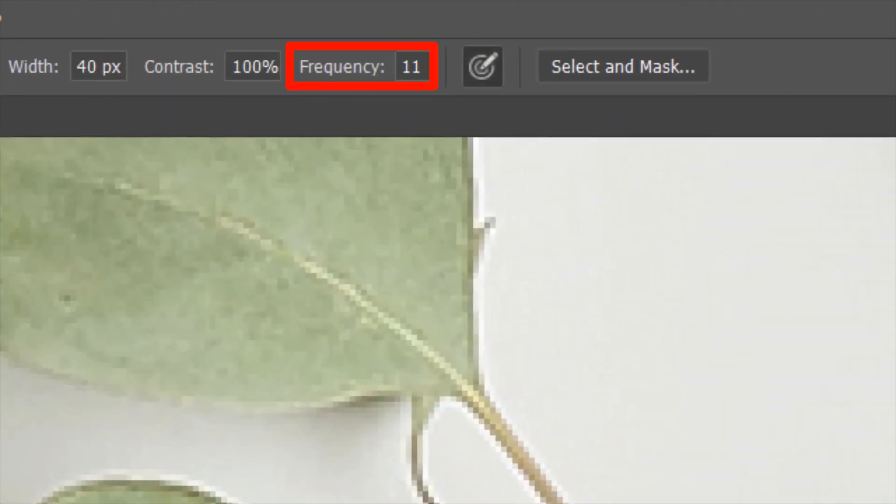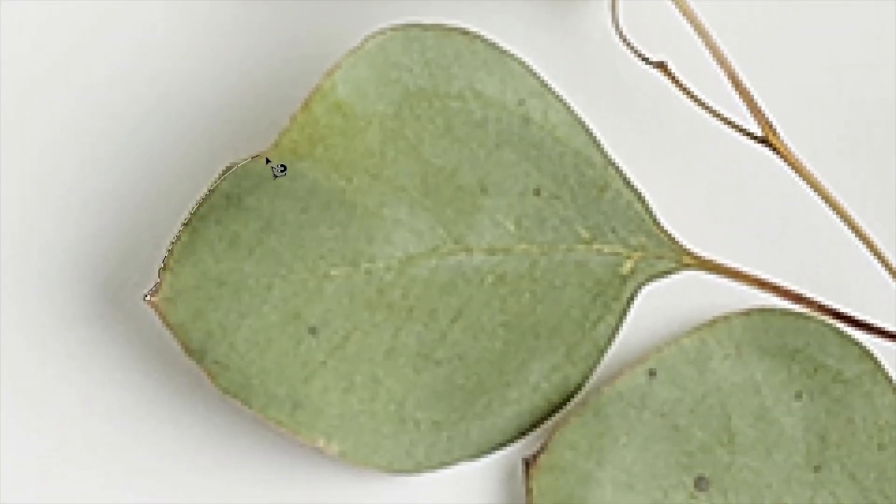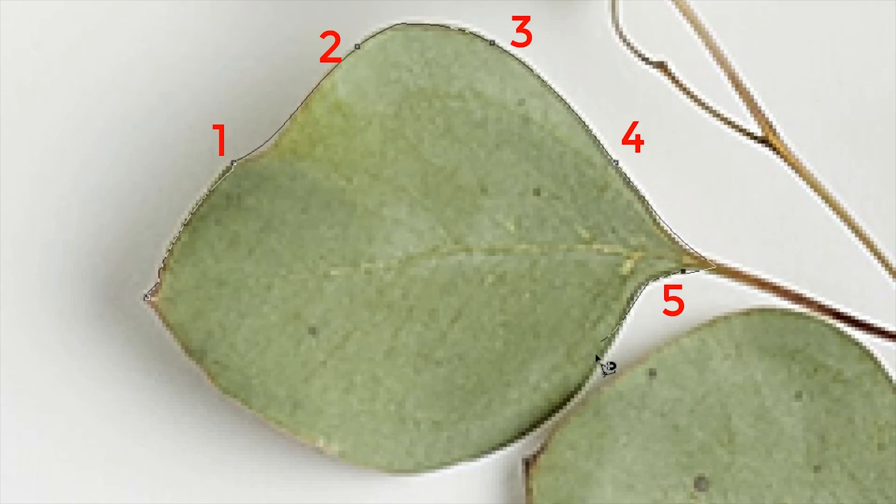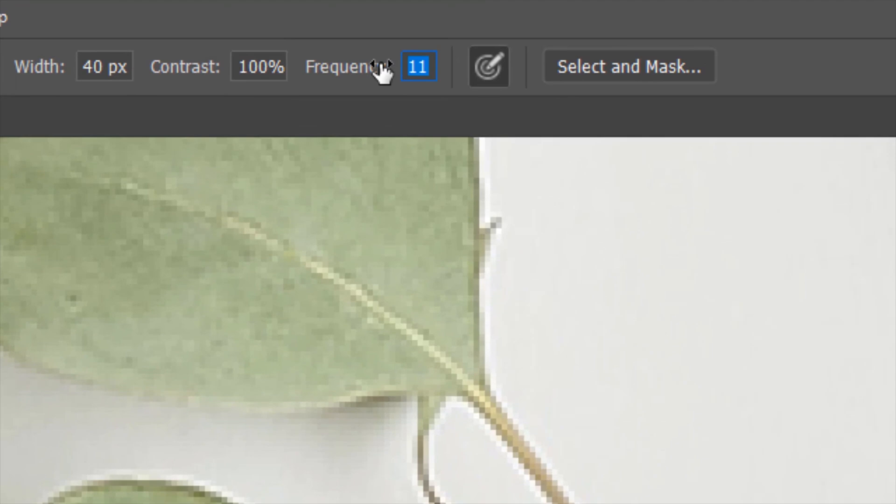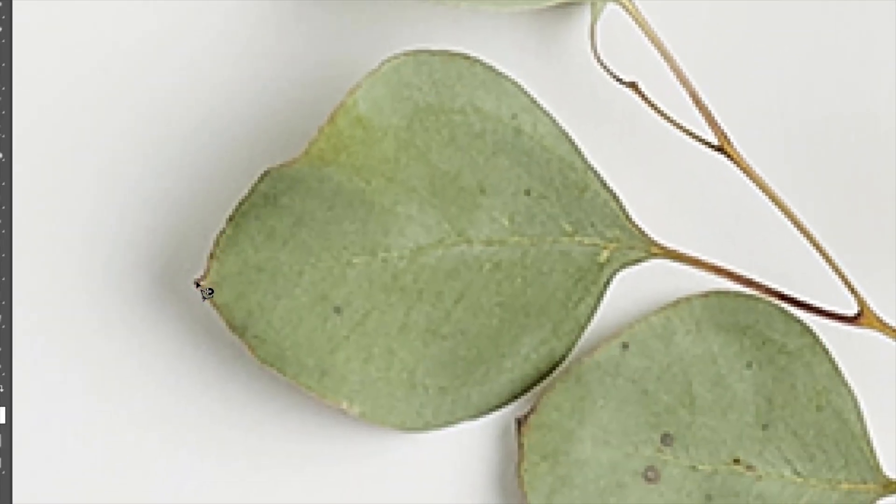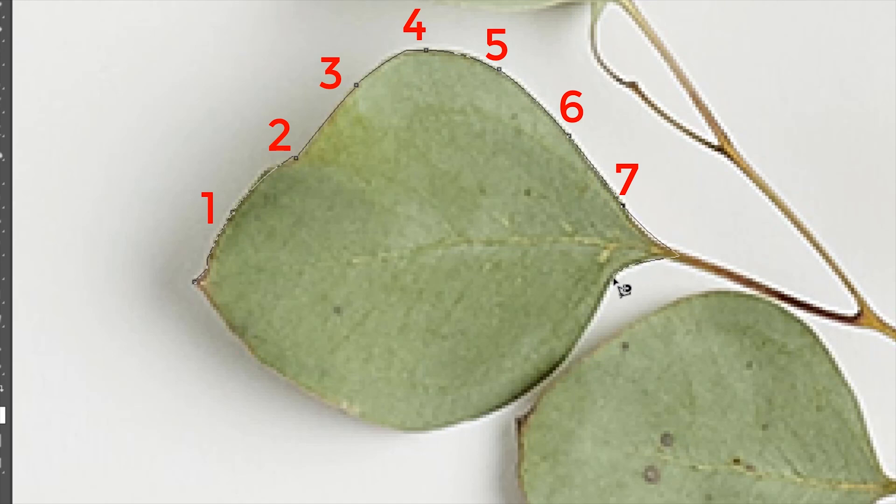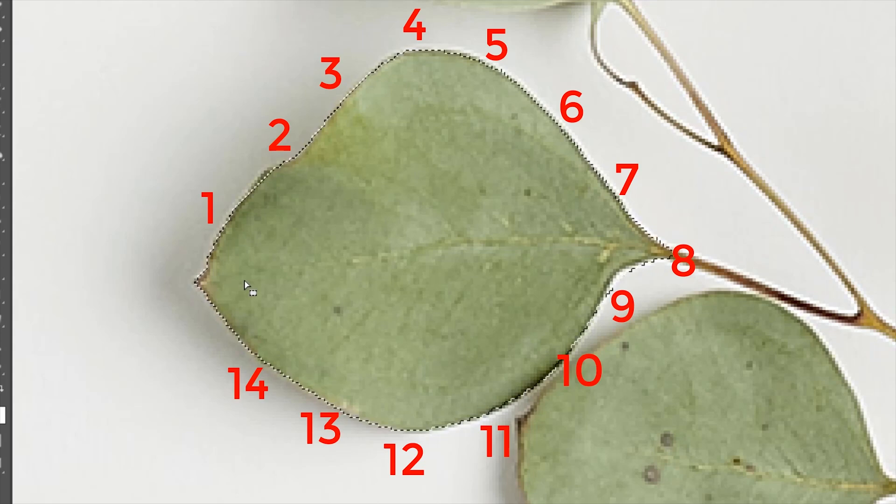Next is frequency. Frequency determines how often the anchor points will be placed in a selection. So with the frequency set to 11, notice how less often the anchor points are placed in the selection. But if I give it a greater value, say 50, you will see there will be more anchor points placed. You will need less anchor points for simple objects and more anchor points for intricate and complex objects.